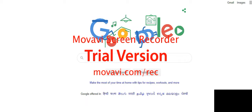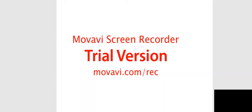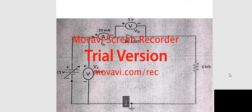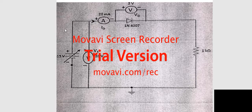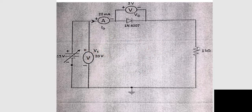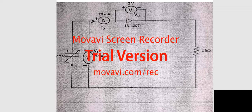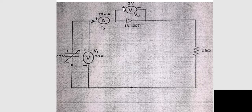Looking at the circuit diagram of a P-N junction diode: the power supply is connected to the positive of the ammeter, and the negative of the ammeter goes to the diode. The diode connects to a resistance, which comes back to the negative of the power supply. The power supply voltage is stored and we connect positive voltage to one side and negative to the other.